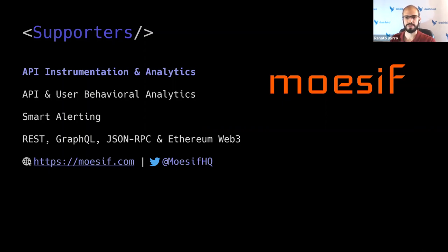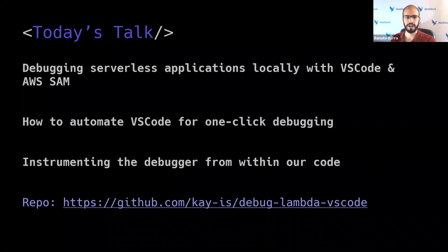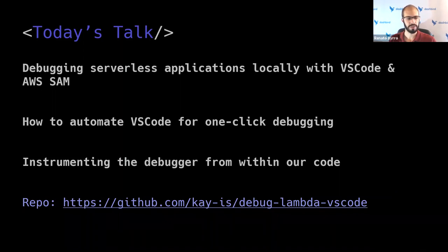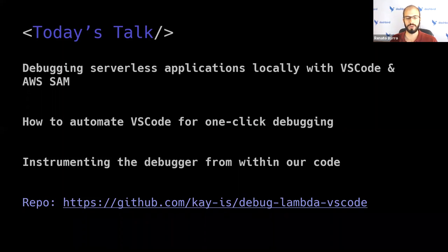For today's talk, we will cover how to debug serverless applications locally with Visual Studio Code and AWS SAM, how to automate Visual Studio for one-click debugging, and how to instrument your debugger from within your own code. We also have a repository at github.com/k-dash/debug-dash-lambda-dash-VS-Code. Everything we present today will be available in that repo. We'll also send the presentation by email along with the recording later.